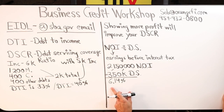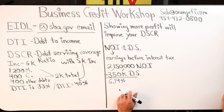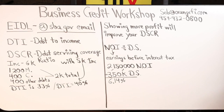The higher the DSCR number the better — unlike DTI where lower is better. DSCR shows how much debt you can cover. DTI is the ratio between your income and debt, while DSCR is the rate — the percentage of how much more debt you can take on. So in this scenario, this person would be strong for $500,000 to a million in additional funding.